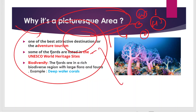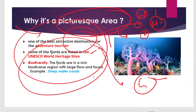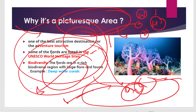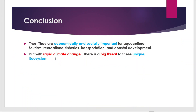Can you name some UNESCO World Heritage fjord sites? Tell me in the comment box. Biodiversity is also a very important factor that attracts tourists — fjords contain rich biodiversity in the form of flora and fauna. Within the depths of fjords there is an existence of deep-water corals, which are very colorful. Although they don't use sunlight as a primary energy source, they make food via chemosynthesis. These features make fjords a truly picturesque area.